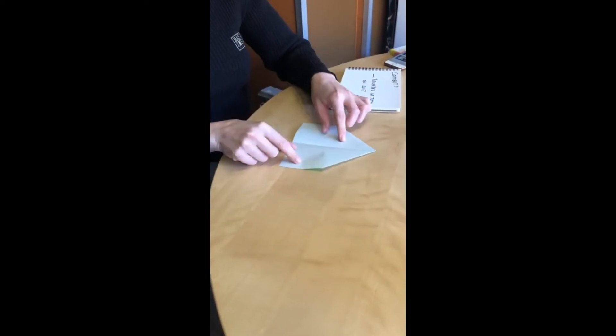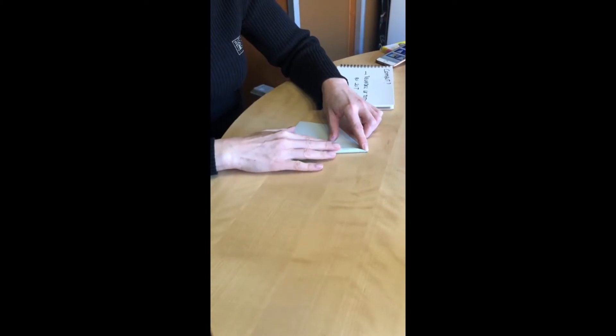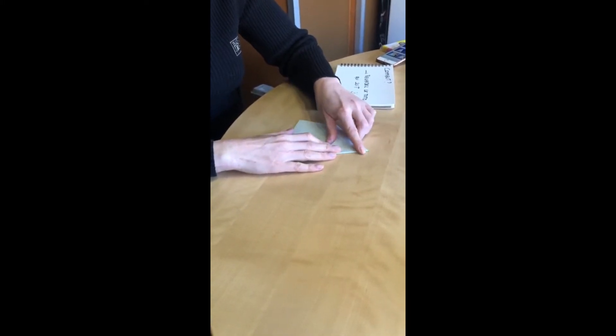On tourne à nouveau et même opération. On plie les coins supérieurs sur la partie centrale, sur le pli central.